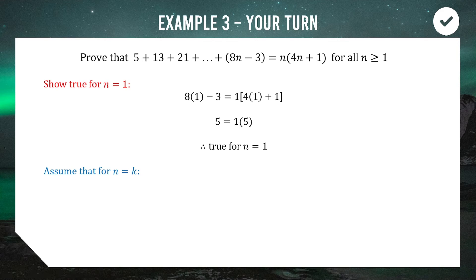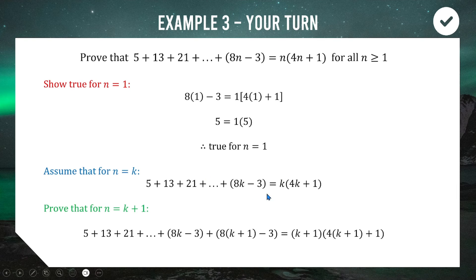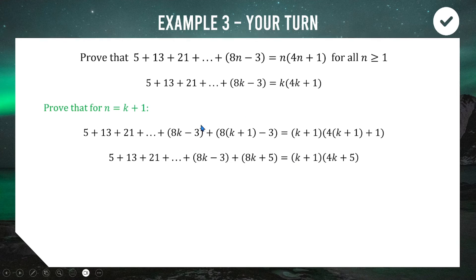Now we assume the expression holds true when n equals k. Then we attempt to show that when n equals k+1 it holds true. Writing the left-hand side of the assumption and adding the next term, which is 8(k+1) − 3. On the right, k+1 replaces k everywhere. Tidying up: the new term simplifies to 8k+5, and the right-hand side target becomes (k+1)(4k+5).